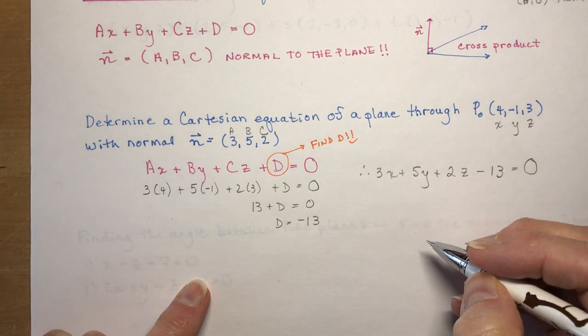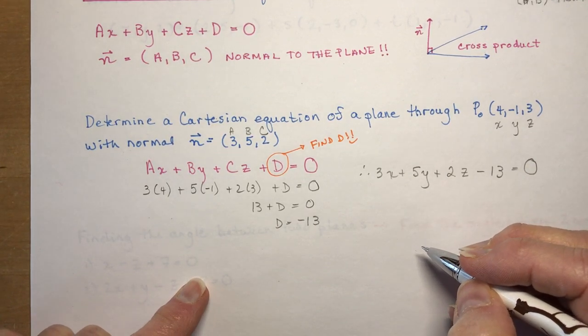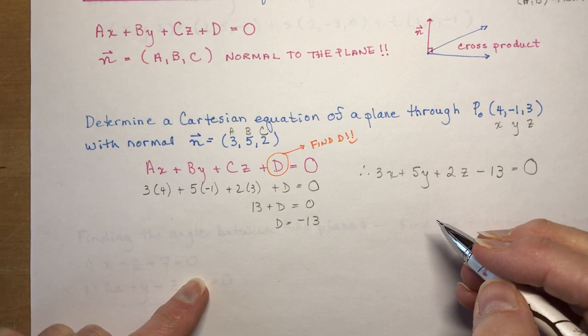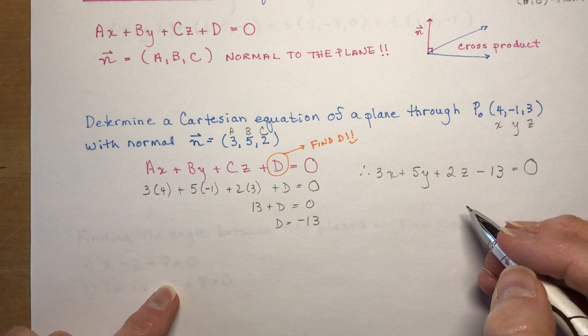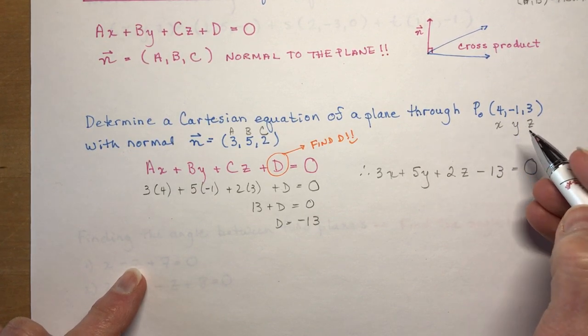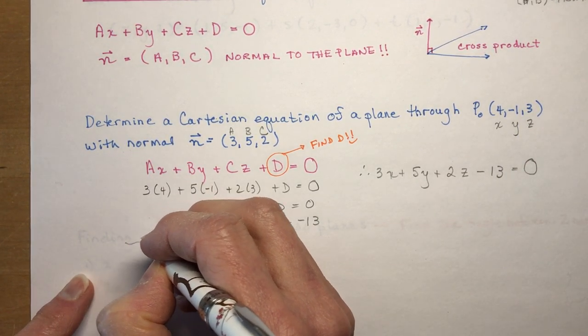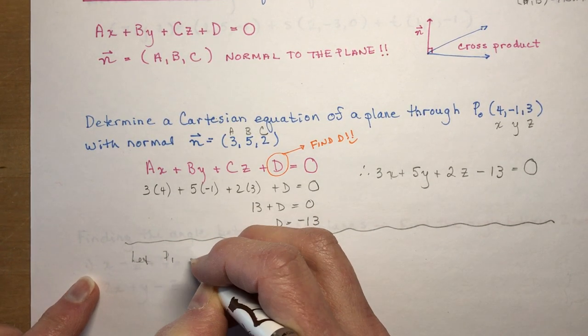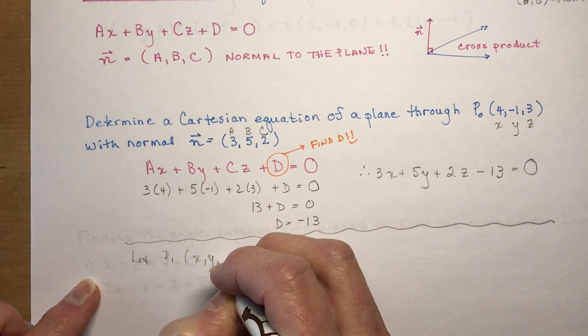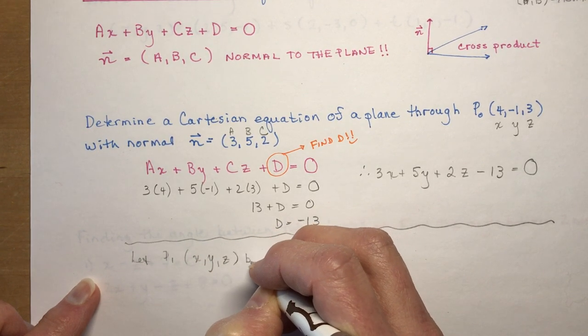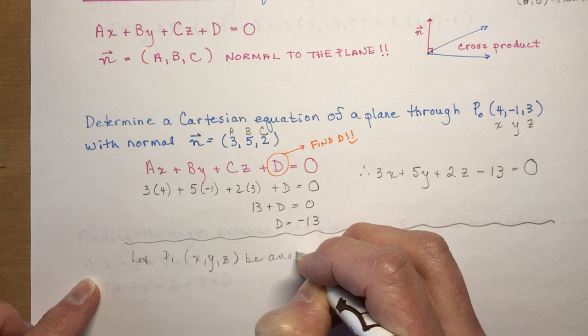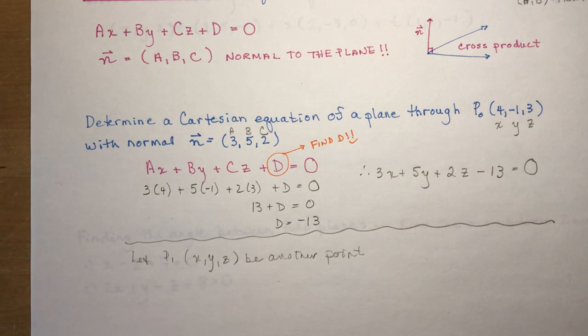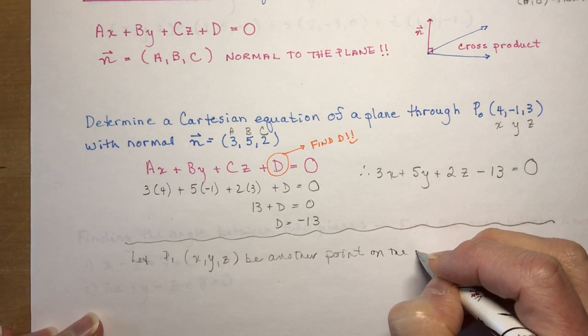So let's say you didn't remember how to do that, but you remembered how to do a dot product, and you know that the dot product can be used to help you to find the equation. So if p0 is 4 minus 1, 3, so this is going to be example 2, another way to do it. So we're going to say let p1, another point, x, y, z, be another point on the plane. And this is quite an okay way to do it, it's just a little bit longer.